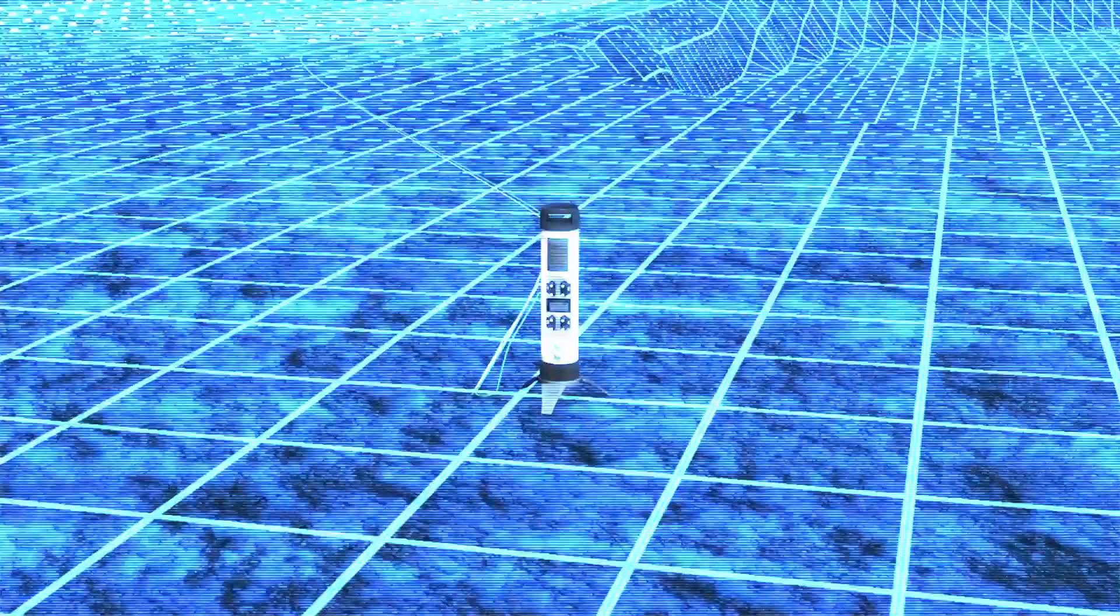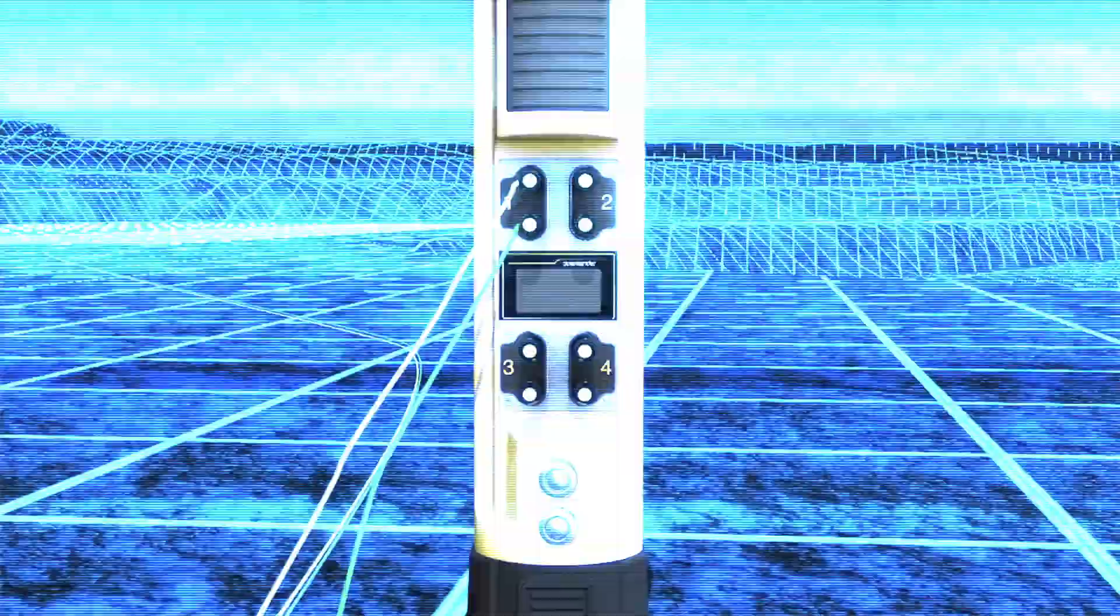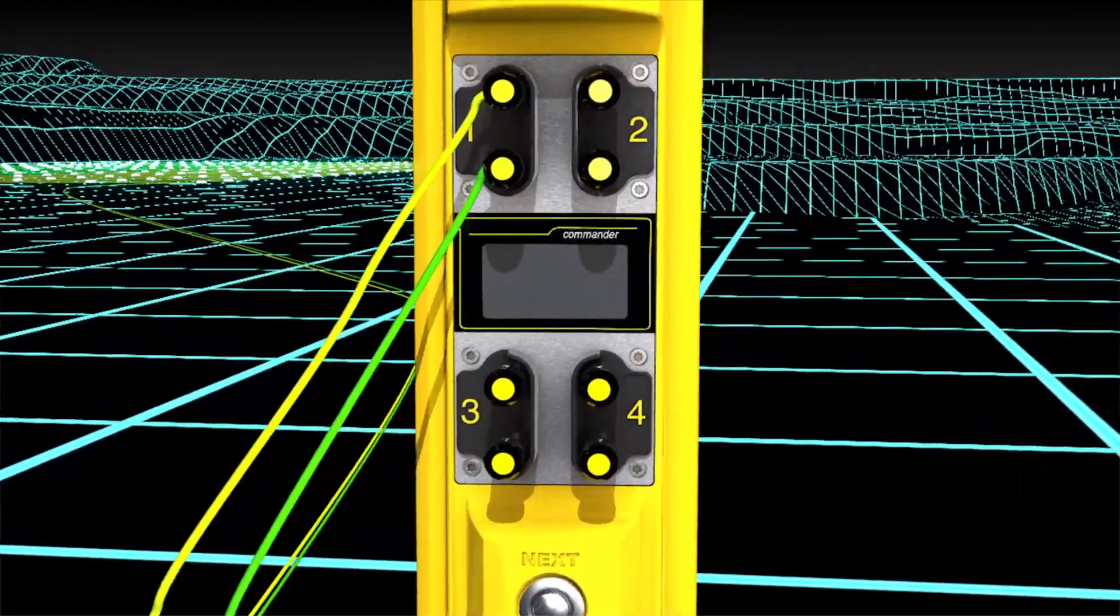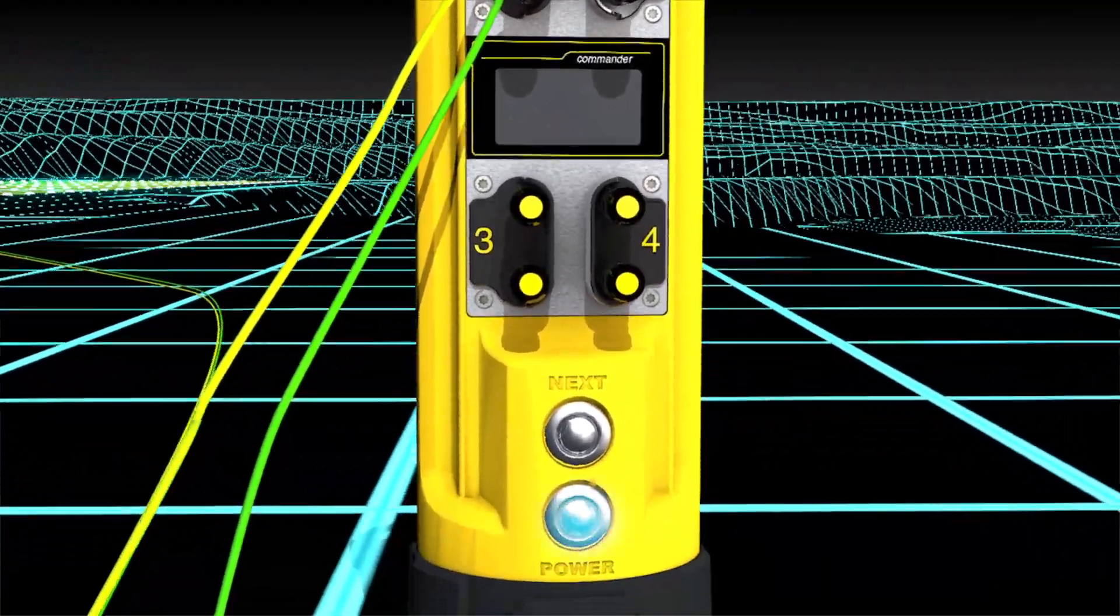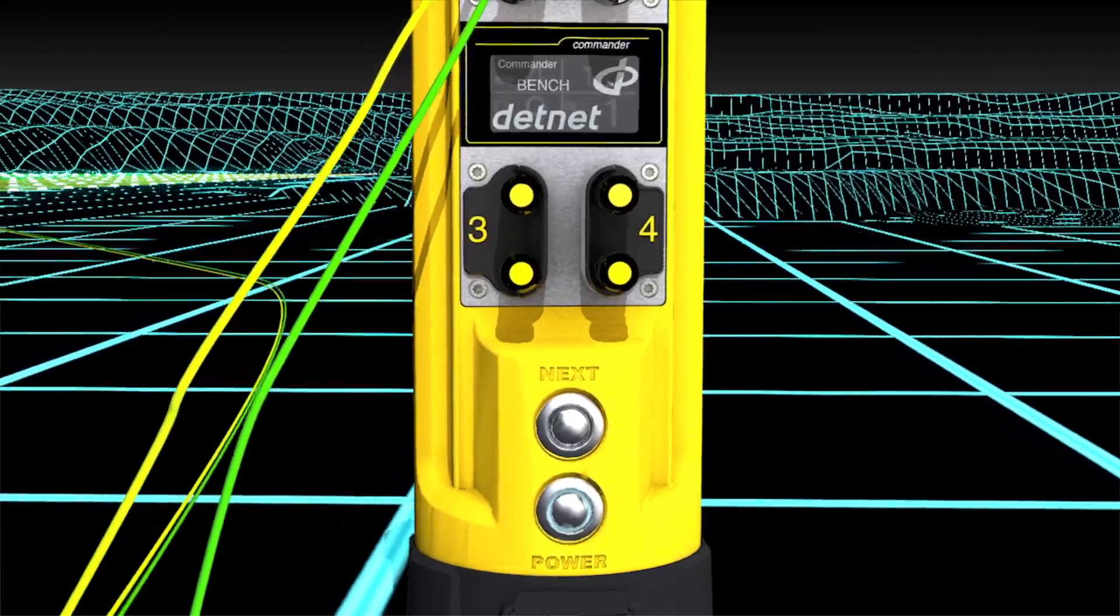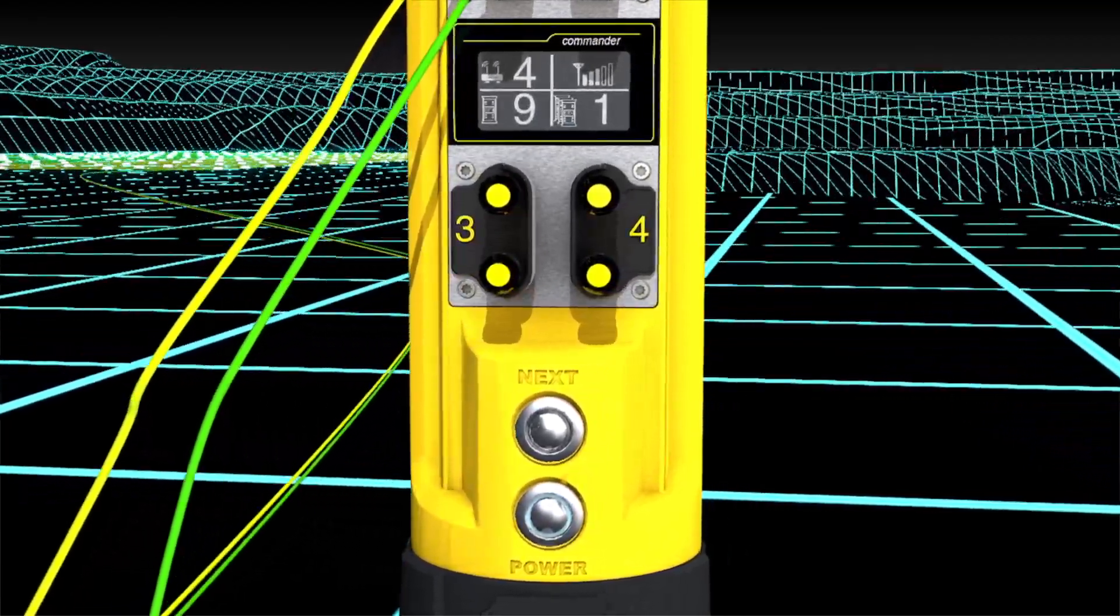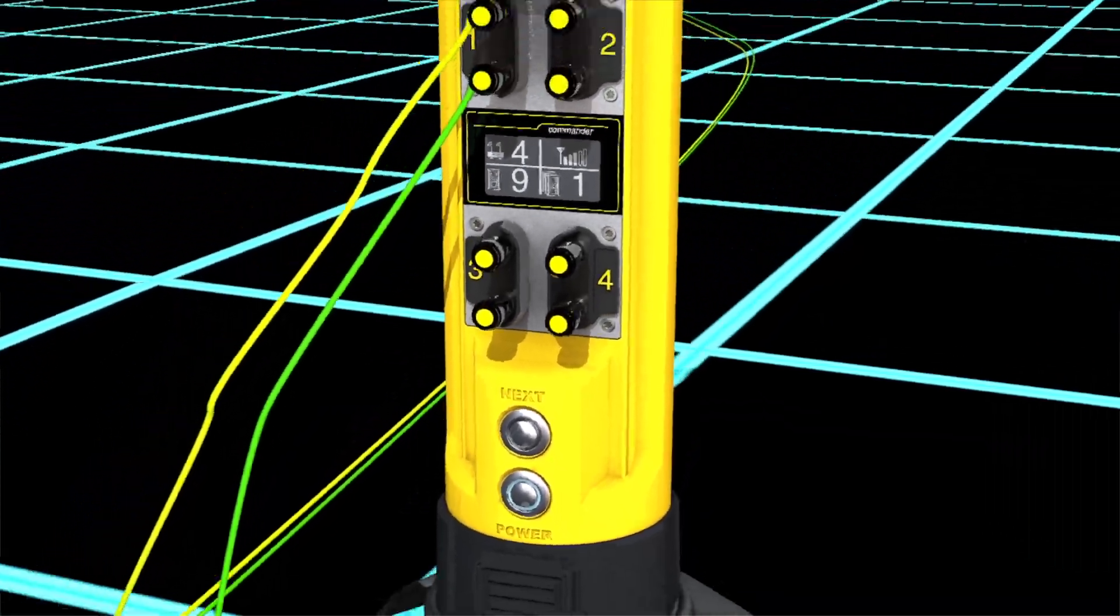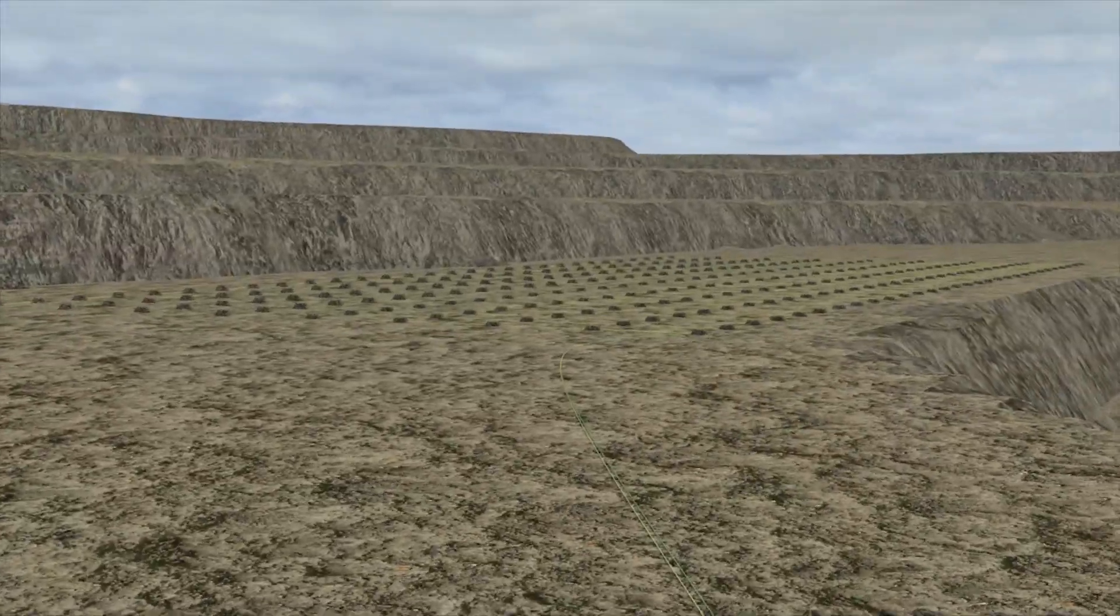Next, you connect the detonators to the DigiShot Plus 4G commander. When the DigiShot Plus 4G commander is switched on, it automatically searches and tests the detonators connected. The system continuously performs an integrity test to ensure all detonators are functional up to the point of blasting.